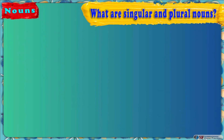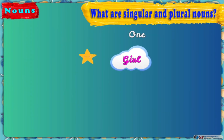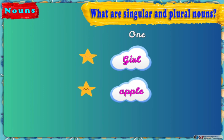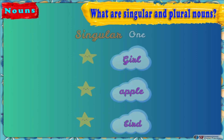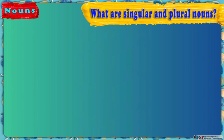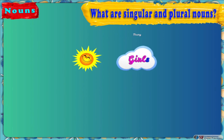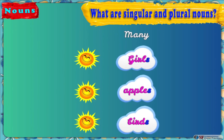The first time you saw out of the window, you told me that you could see a girl with an apple in her hand and a bird sitting in its nest. So they are all singular nouns. The second time you told me that you could see two girls, four apples, and three birds. So they are all plural nouns.